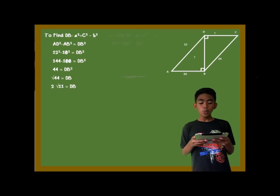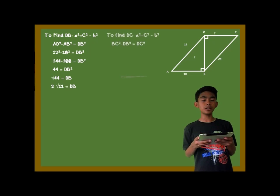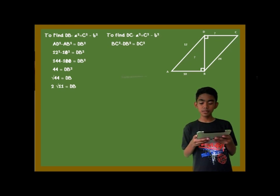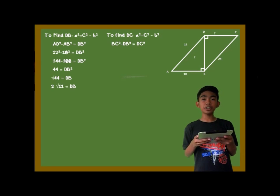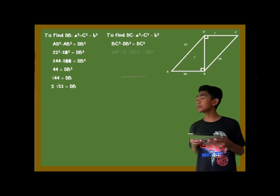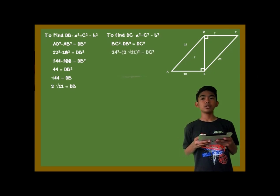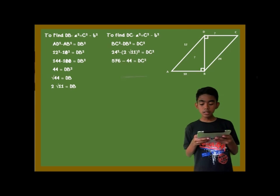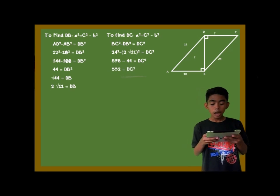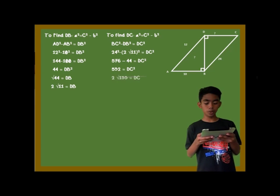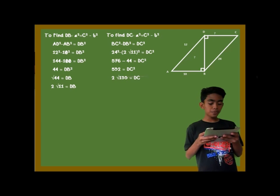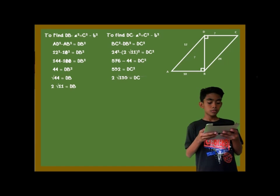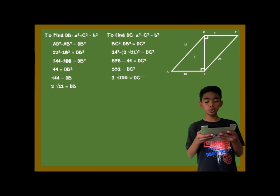Then to find DC, we use the equation c squared minus b squared is equal to a squared, because we are finding the other leg of triangle DBC. So, 24 squared minus (2 square root of 11) squared is equal to DC squared. Then it is equal to 576 minus 44 is equal to DC squared. To find DC, we take the square root of the difference of 576 minus 44, which is 532, or 2 square root of 133.